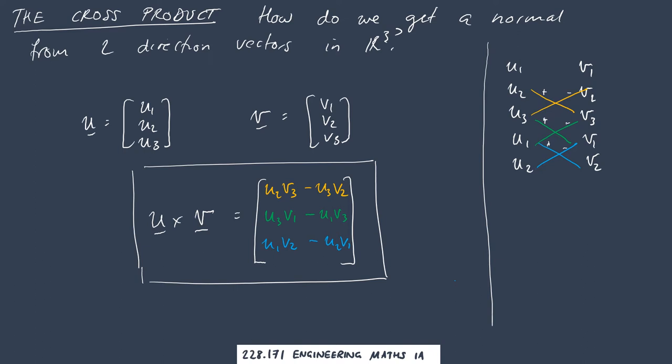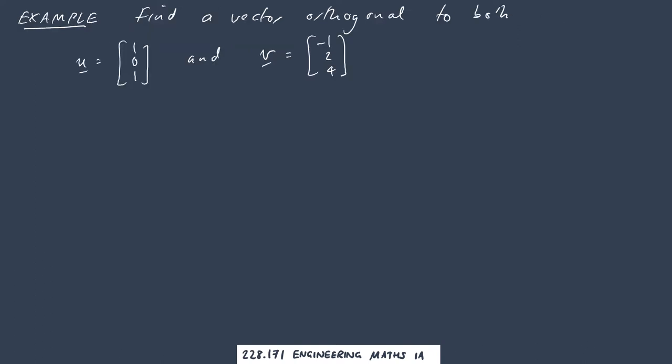Next we'll do a quick example just to get used to actually playing with this. Here's a typical example: we want to find a vector that is orthogonal, that means at right angles, to both u = [1, 0, 1] and v = [-1, 2, 4].